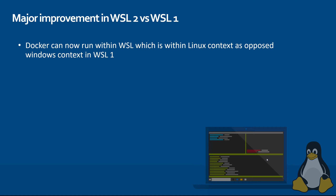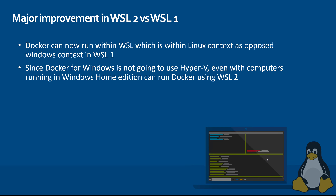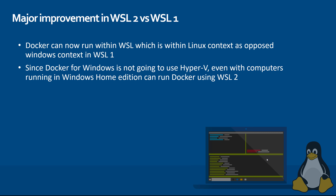Since Docker for Windows is not going to use Hyper-V, even computers running Windows Home Edition can run Docker using WSL2. Previously, if you installed Docker for Windows on the Home Edition of Windows it wouldn't run, but now Docker for Windows directly talks with the WSL2 kernel to run Docker within it rather than requiring Hyper-V to store the Linux kernel — which is the most awesome thing.